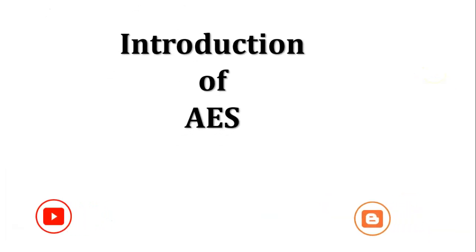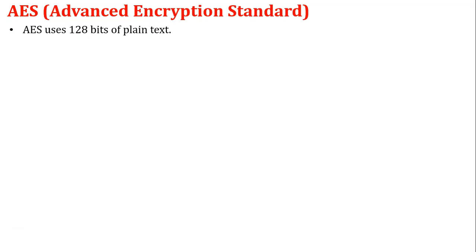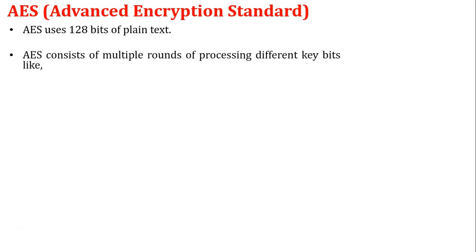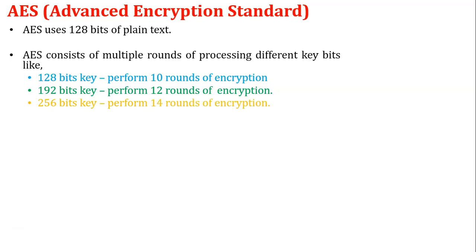Let's start with the first topic: introduction of AES. AES stands for Advanced Encryption Standard. This algorithm uses 128 bits of plain text as input, and another input is the encryption key, which comes in different sizes. AES consists of multiple rounds: a 128-bit key performs 10 rounds, a 192-bit key performs 12 rounds, and a 256-bit key performs 14 rounds of encryption.